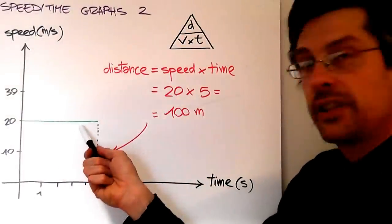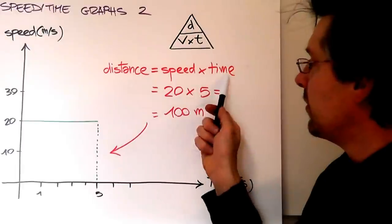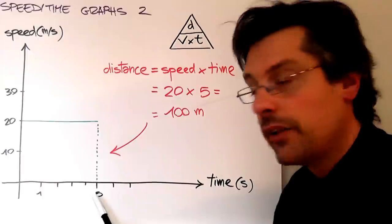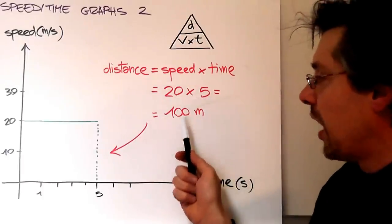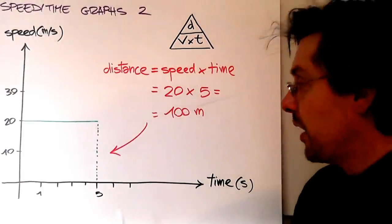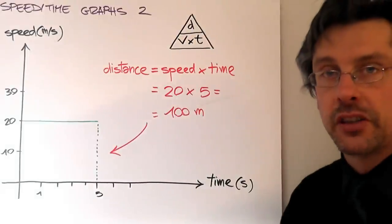So this is our formula. The speed from the graph, we see the speed is 20. The time, again from this graph, we see that the time is 5. So 20 times 5. In this motion, the object has moved 100 meters.